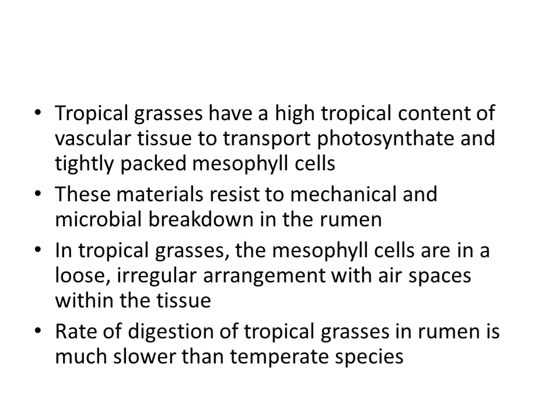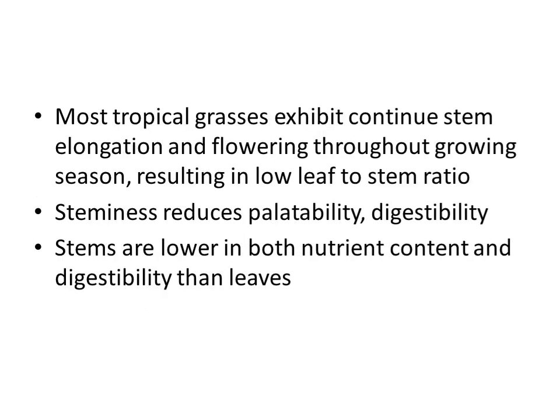In temperate grasses, the mesophyll cells are in a loose, irregular arrangement with air spaces within the tissue. The rate of digestion of tropical grasses in the rumen is much slower than for temperate grasses. Most tropical grasses exhibit continuous stem elongation and flowering throughout the growing season, resulting in a low leaf-to-stem ratio. Stems reduce palatability and digestibility, and are lower in both nutrient content and digestibility than leaves.